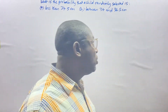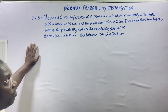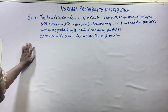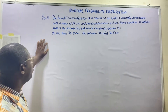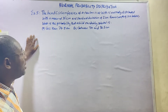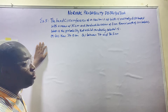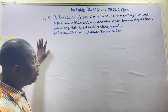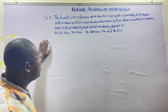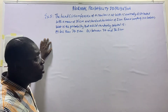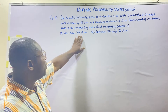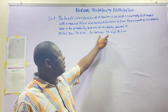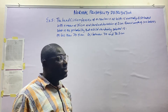Let's look at what we have in order to solve this problem. The head circumference of a newborn at birth is normally distributed with a mean of 35 cm and standard deviation of 2 cm. For a sample of 100 babies, what is the probability that a child randomly selected has a circumference: (1) less than 34.5 cm, and (2) between 34 and 36.5 cm?